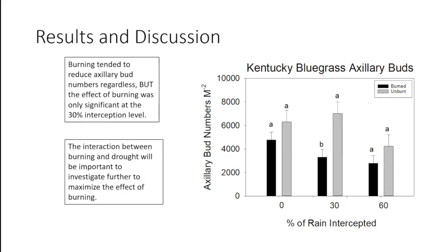Looking at the drought treatment results: regardless of drought level, burning tended to reduce the number of axillary buds, but it was really only statistically significant at the 30 percent drought level. I think this interaction between moderate drought and burning is important to think about going forward. One thing to keep in mind is that these rain intercept shelters were removing rainfall that was already limited — so at the 60 percent level, burning and not-burning may not have looked as different because both were already quite suppressed.